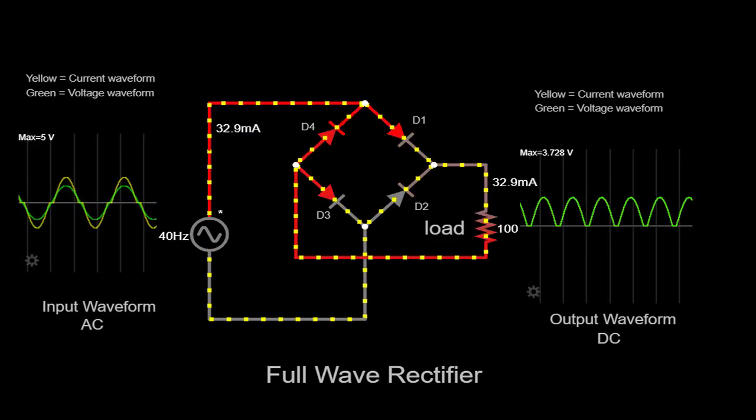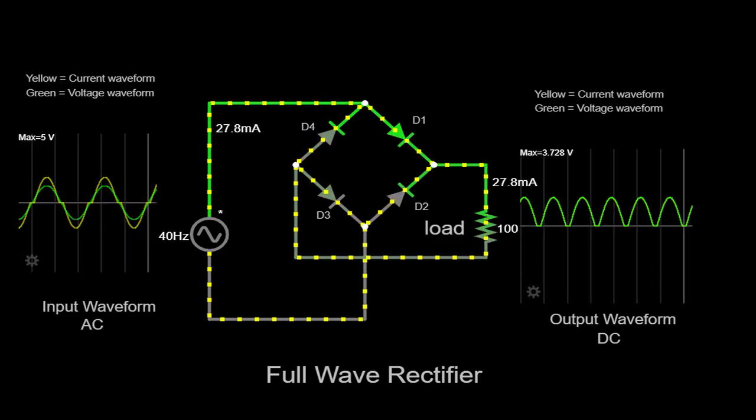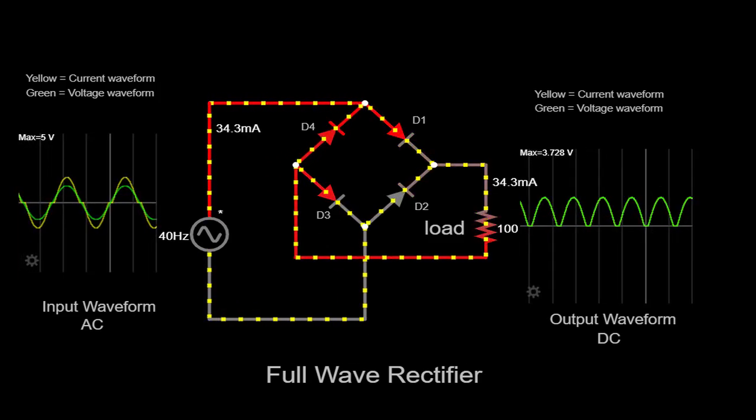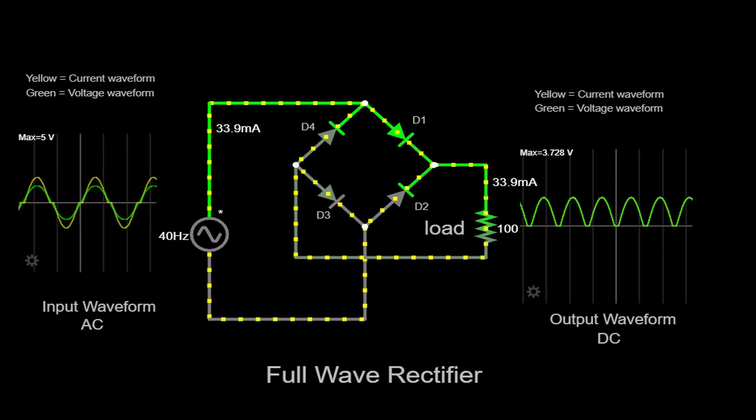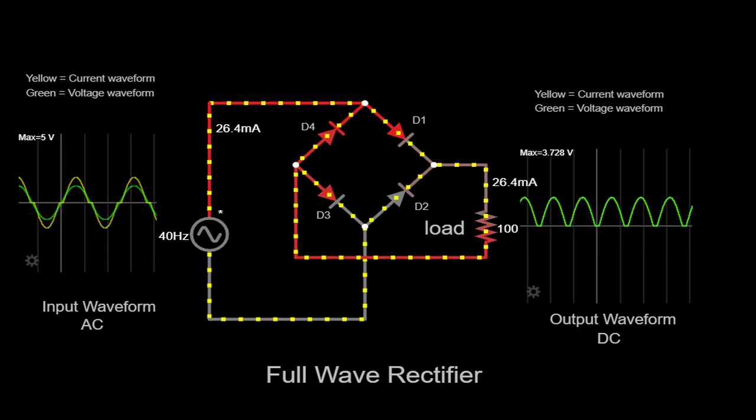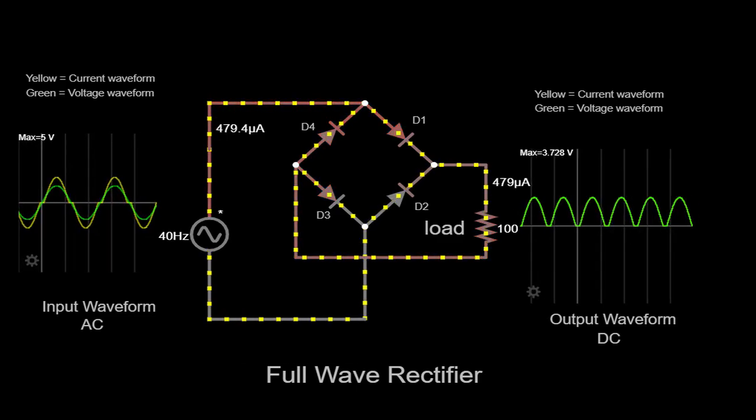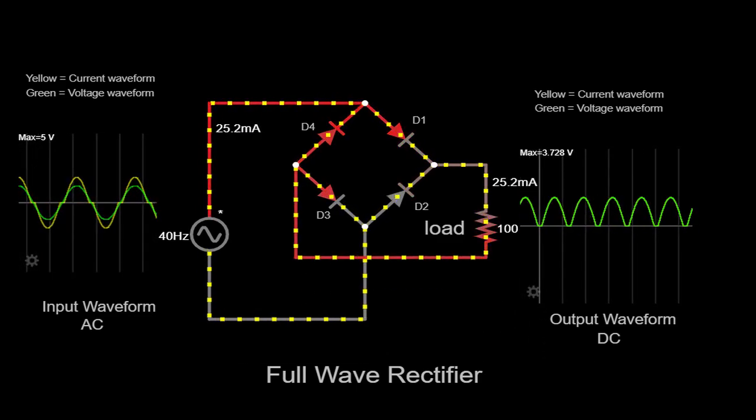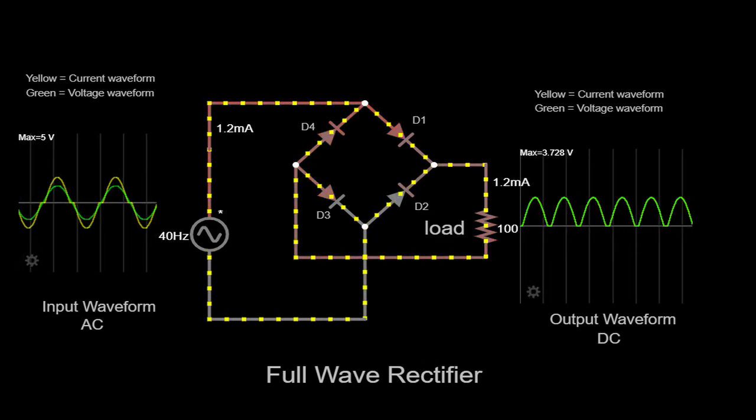Conversely, when the AC input voltage becomes negative, diodes D2 and D4 become forward biased, allowing current to flow through them. Now, the current flows through the load resistor in the opposite direction, again delivering power to the load. Simultaneously, diodes D1 and D3 become reverse biased, effectively blocking any current through them.